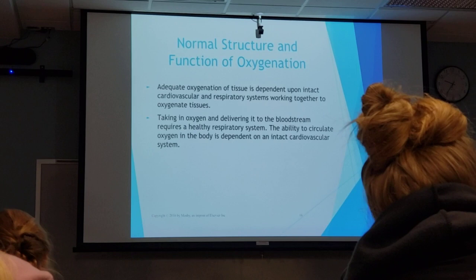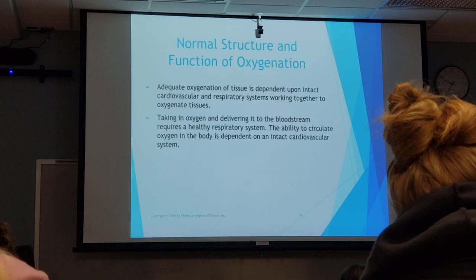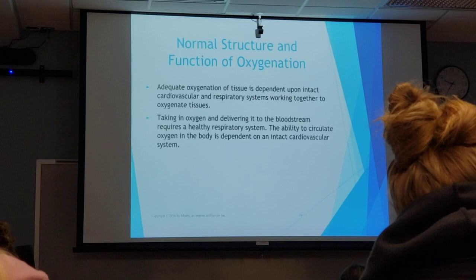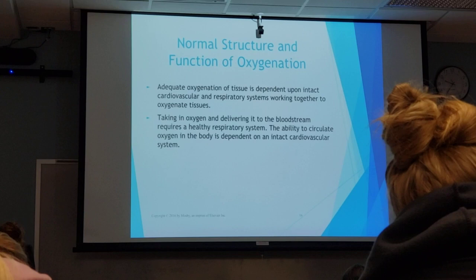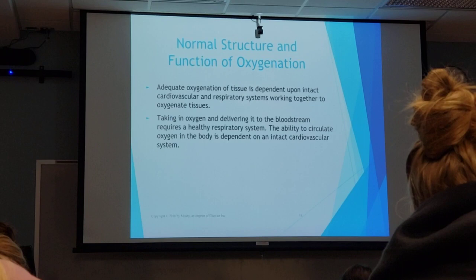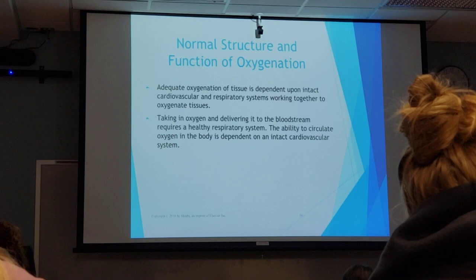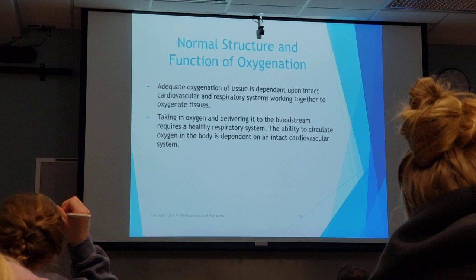If somebody got stabbed and there is bright red blood coming out, is that oxygenated or deoxygenated blood? Oxygenated — and that usually comes from arteries, because arteries carry oxygen to the rest of your body. Red is oxygenated; blue or dark blood is deoxygenated. Veins carry deoxygenated blood back through the system to get oxygenated again.